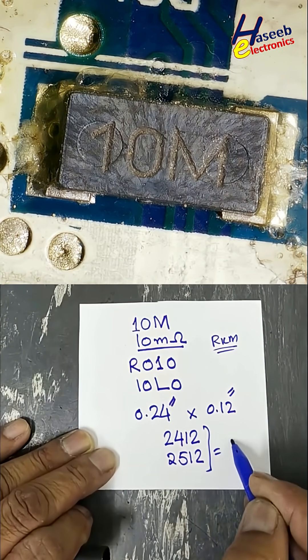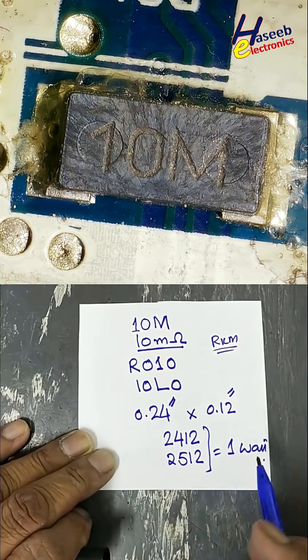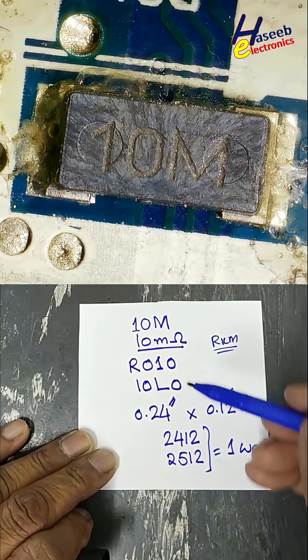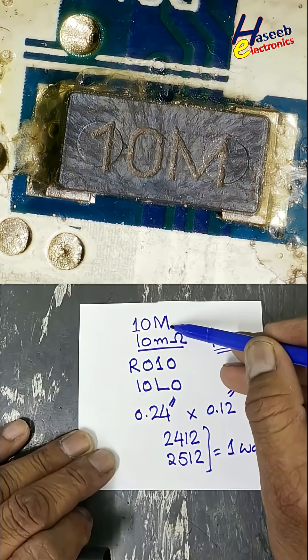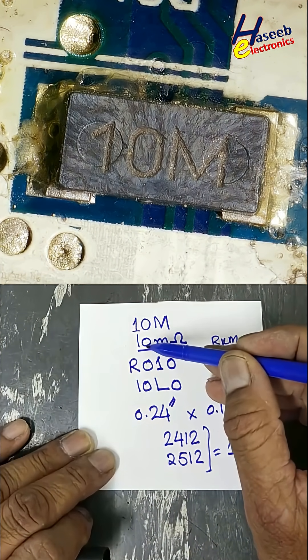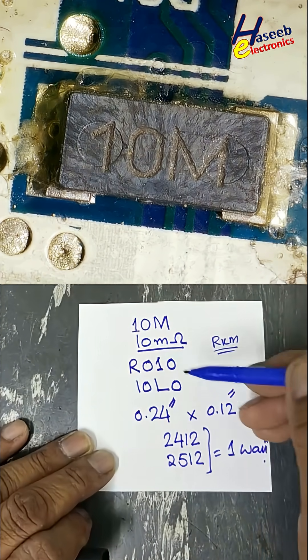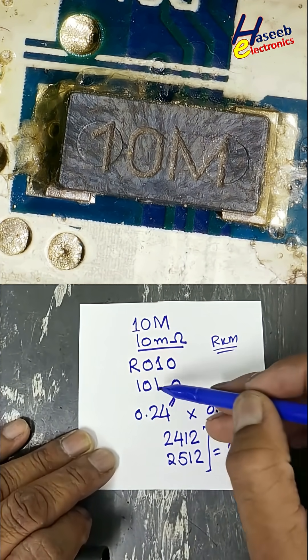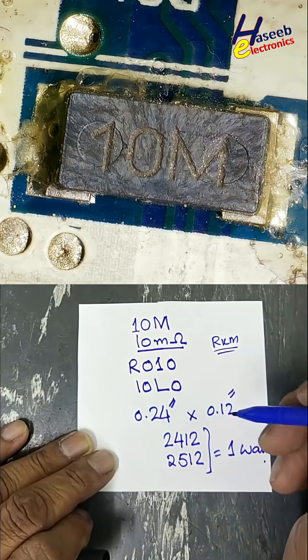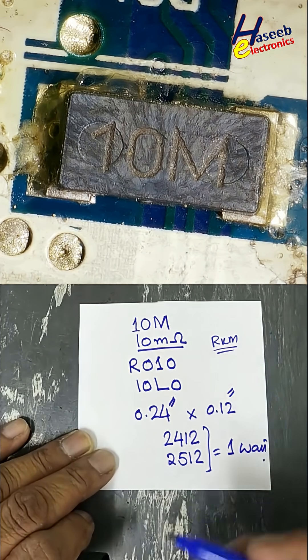It is a one watt resistor, 10 milli-ohm. If we have this code, the printed value 10 milli-ohm, R010, or 10L0 - all these represent the same 10 milli-ohm resistor.